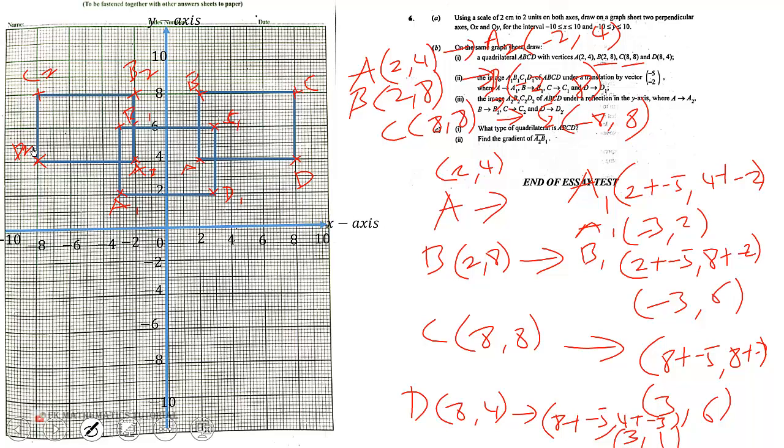Now we're told, what type of quadrilateral is ABCD? So ABCD is a rectangle.